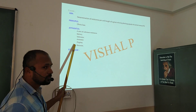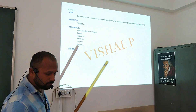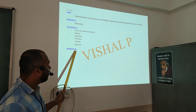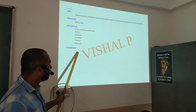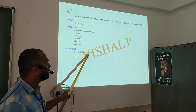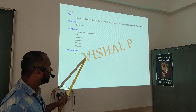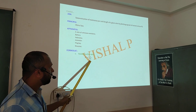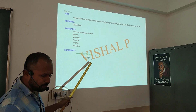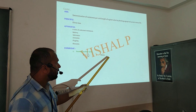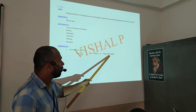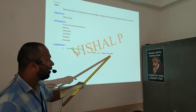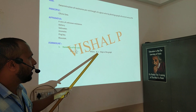Now, here are the formulae. The first formula is resistance of the wire. You have the formula: R is equals to 1 divided by M. Here M is equals to the slope of the graph. We will draw the graph, we will calculate the slope, and that slope will be M.